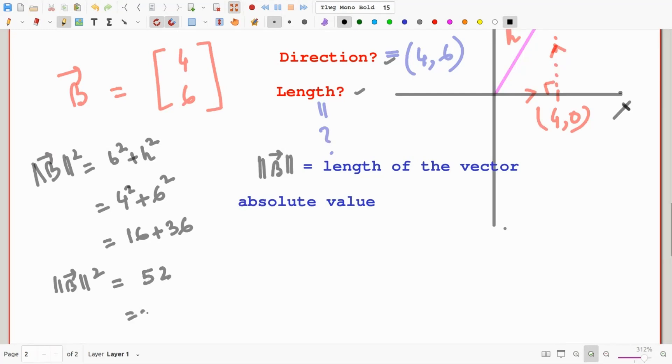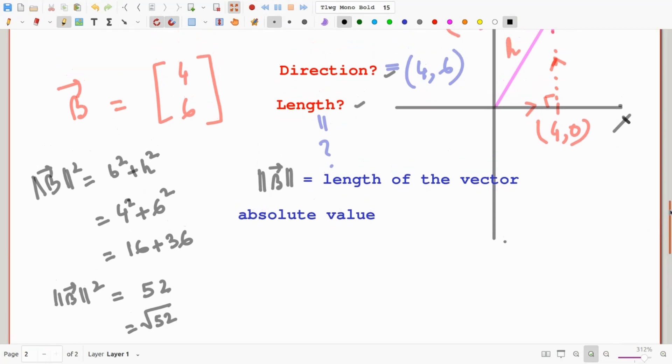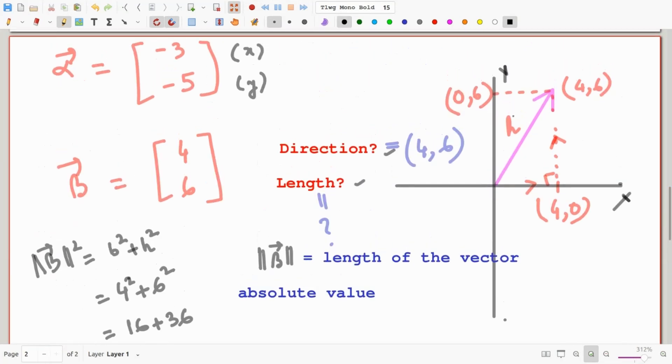And it is really just as simple as that. All we are doing when we are finding the length of a vector is finding the hypotenuse of a right angle triangle using the Pythagorean theorem.